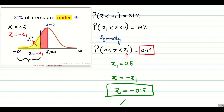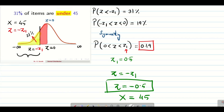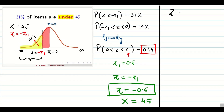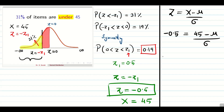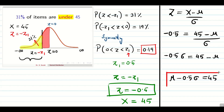Now I know x = 45 and z = -0.5. Using z = (x - mu) / sigma, substituting gives -0.5 = (45 - mu) / sigma. Cross-multiplying and rearranging, we get the first equation: mu - 0.5·sigma = 45.